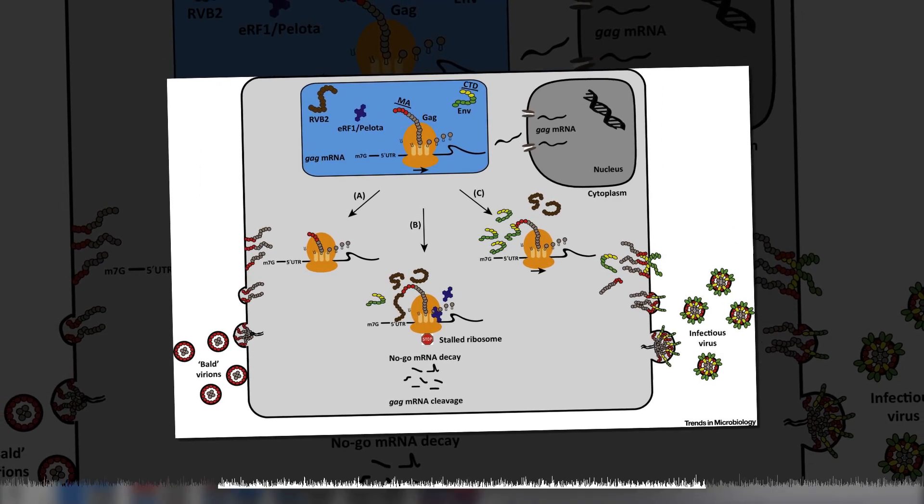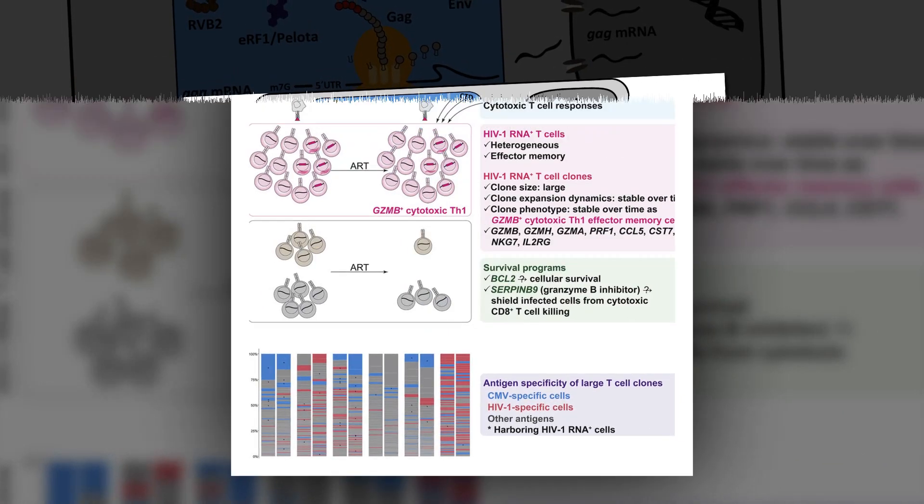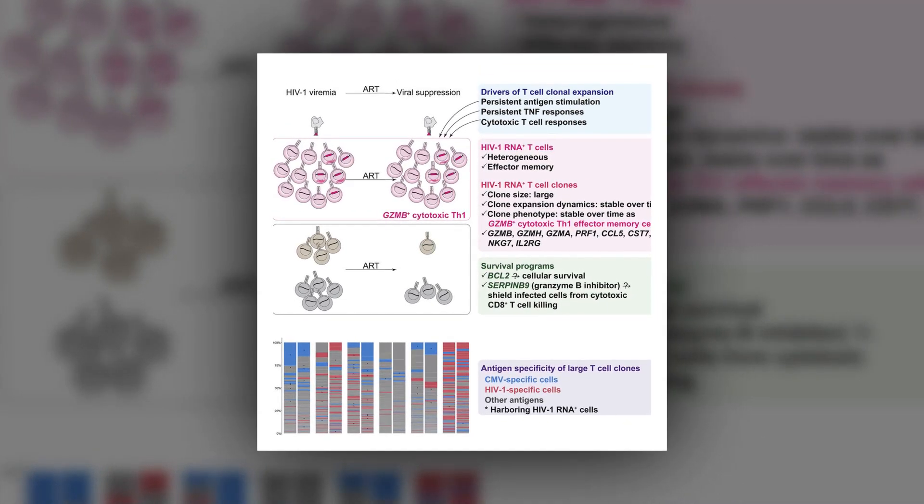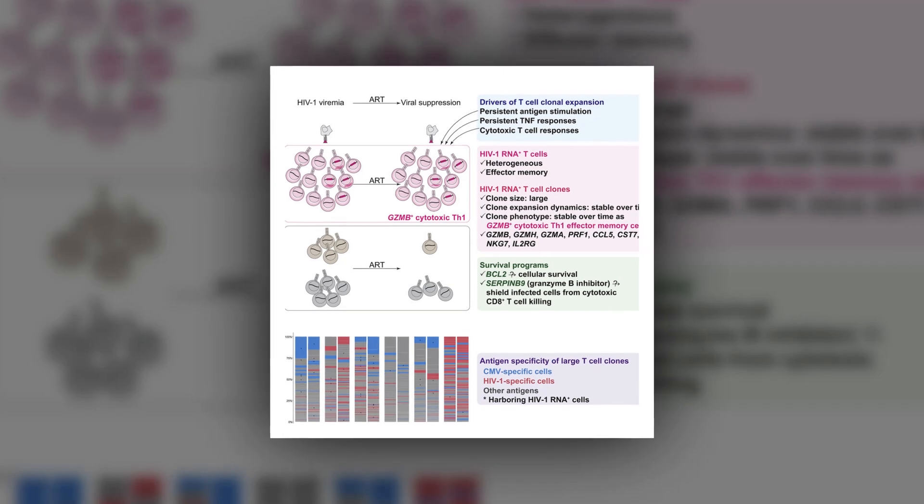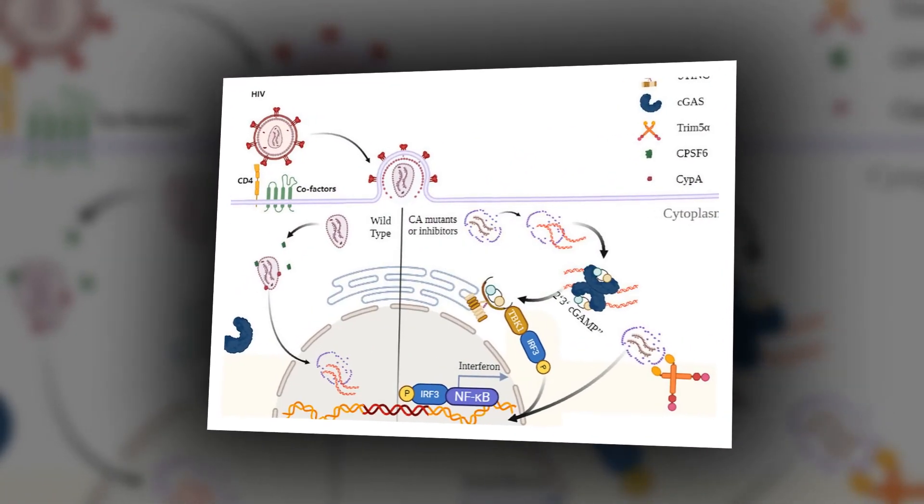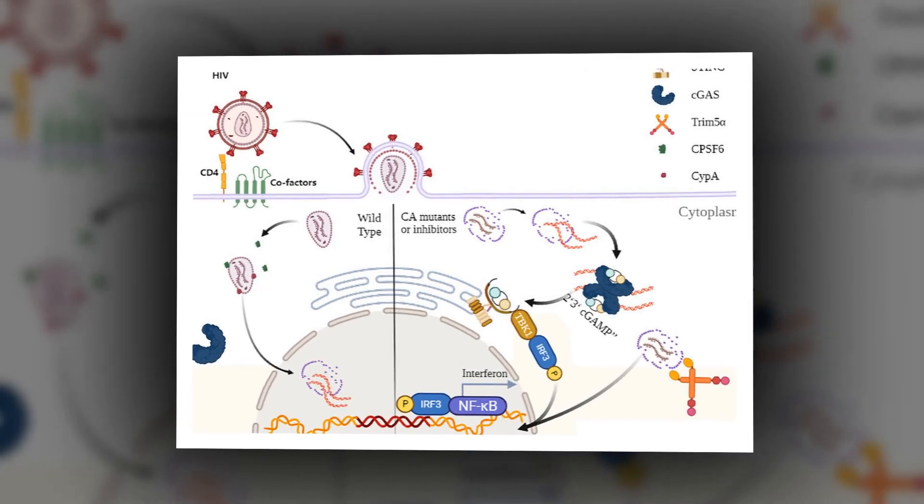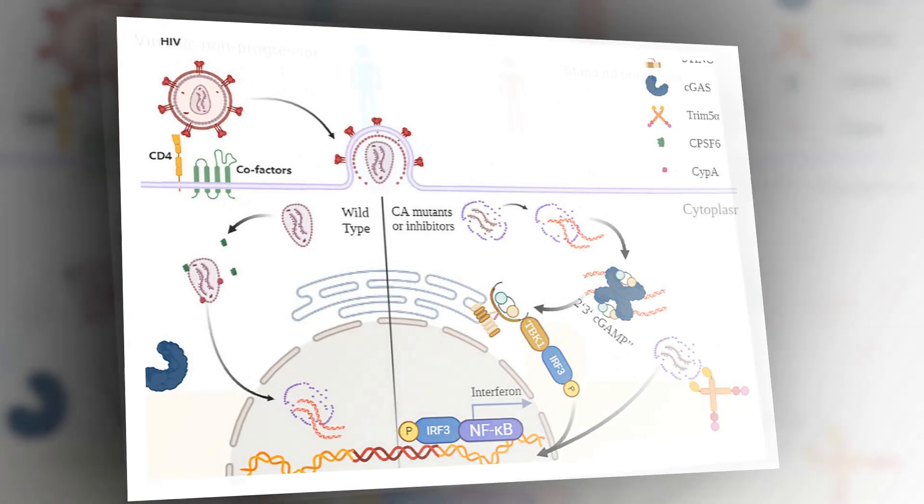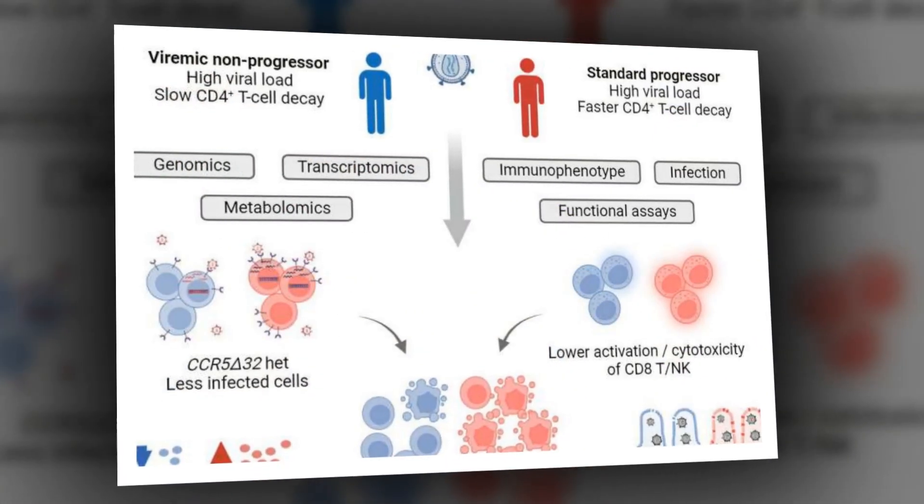VNPs had higher proportions of naive CD8 T-cells and fewer activated memory CD8 T-cells when compared to progressors. Naive CD8 T-cells have not yet encountered an antigen, anything that triggers an immune response. Memory CD8 T-cells are the mature version that has encountered an antigen before and creates an immune response if it is re-encountered.